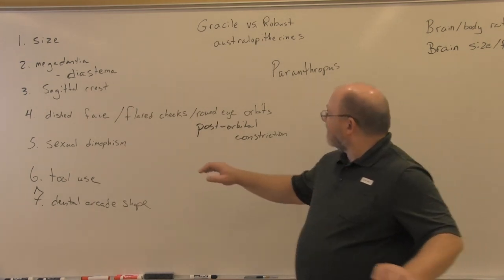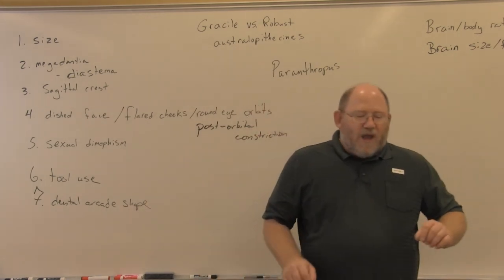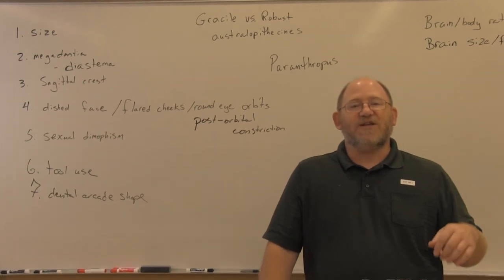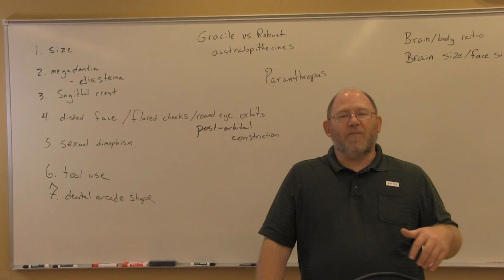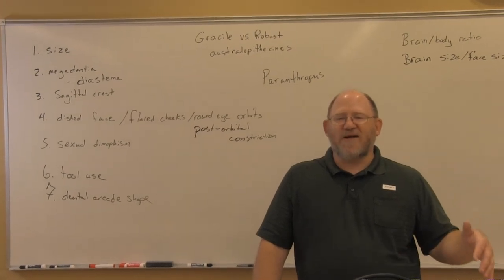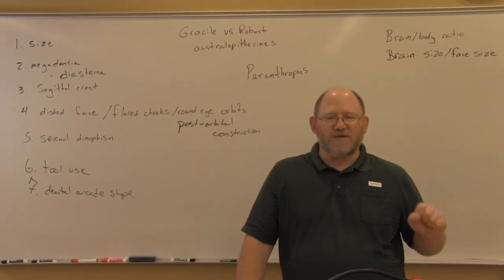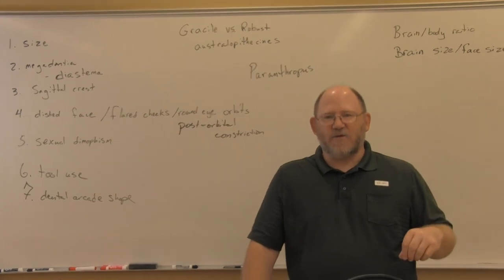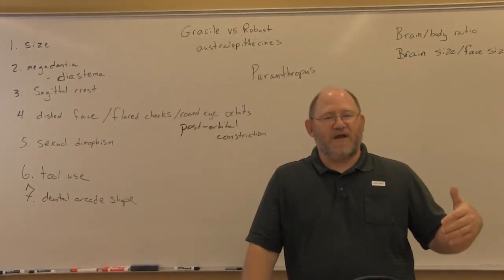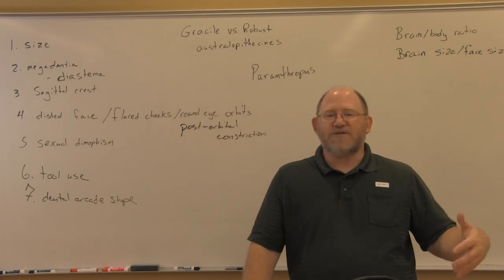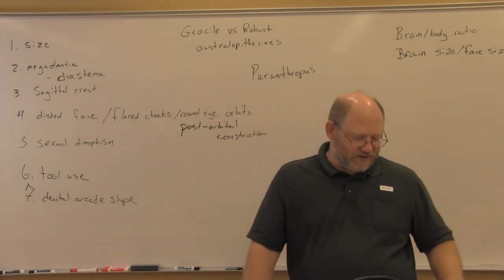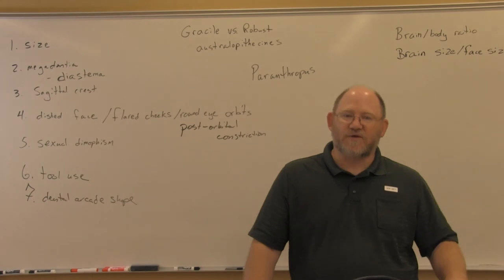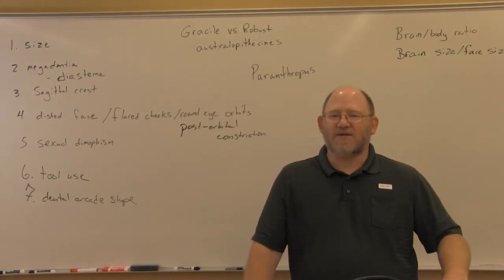The sixth point: there is no evidence of robust australopithecines using stone tools. We have not found remains of robust australopithecines in association with stone tools. In recent years, we have found gracile australopithecines in East Africa associated with stone tools, so the conventional wisdom is that the first stone tool makers and users were some species of gracile australopithecine.